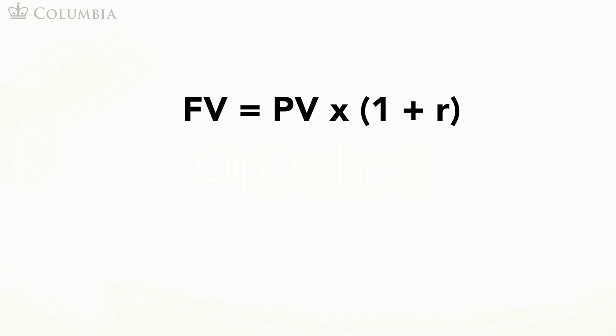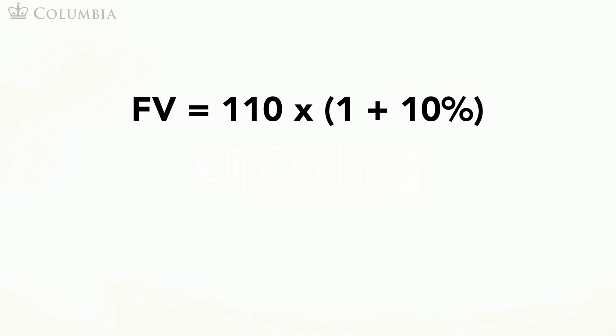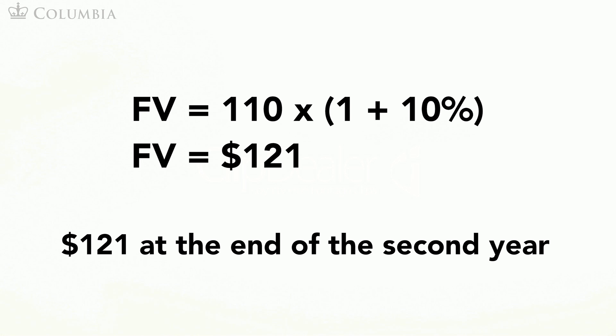Now we need to figure out how much money you will have if you deposit these $110 and wait one more year. But notice this is the same problem as before, as you are depositing money for one year. We apply the same formula and obtain that you will have $121 at the end of the second year.